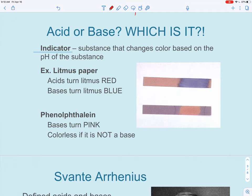Okay acid or base, which is it? So to help us figure out if we have an acid or base we often use an indicator. And so these substances change color depending on the pH. So if you have litmus paper, acid will turn blue litmus paper red, and bases turn red litmus paper blue.